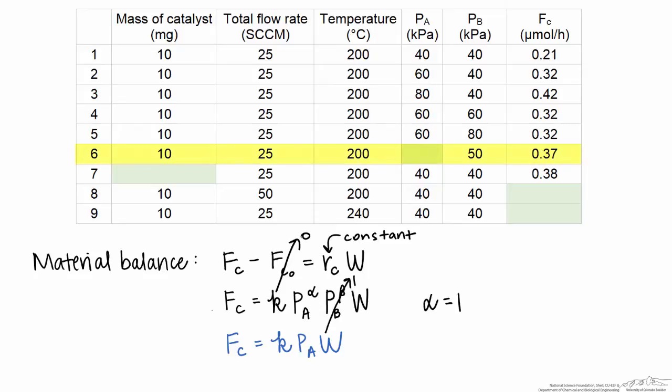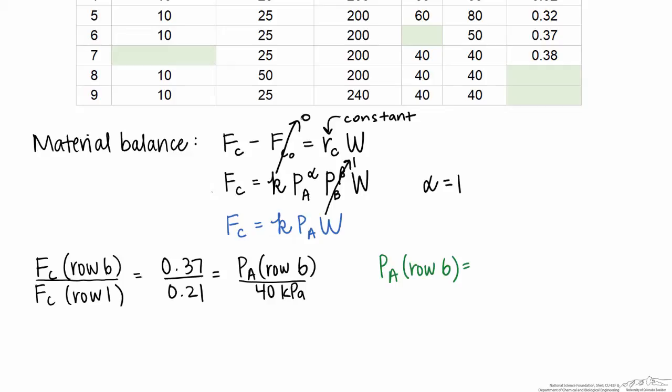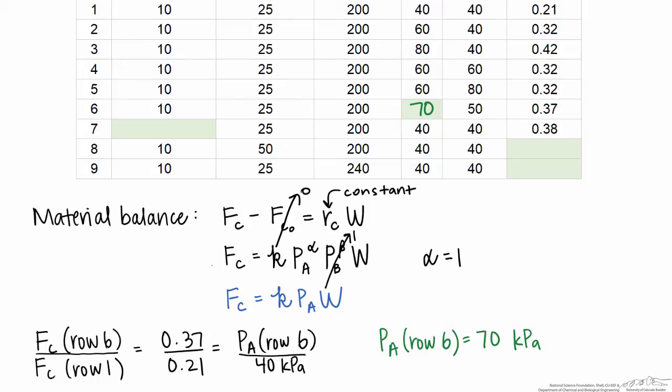If we look now at row 6, what we can see is that relative to row 1, the partial pressure of B has gone up, but that doesn't affect the rate. The rate has gone up by a factor of 0.37 over 0.21. The catalyst mass hasn't changed, it's still 10 milligrams. The rate constant hasn't changed because the temperature is the same. Therefore, Fc in row 6 divided by Fc in row 1, which is 0.37 over 0.21, has to equal the partial pressure used in row 6 divided by the partial pressure of component A in row 1. Solving for Pa, we get a value of approximately 70 kilopascals.